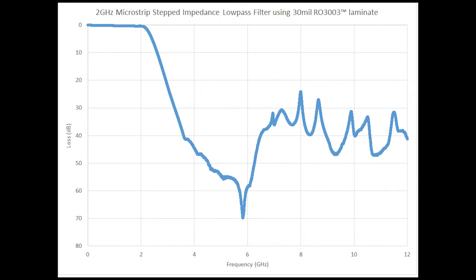Using the Butterworth also means that the transition from the pass band to the stop band is not that crisp. Over a range of frequencies you get the transition, and out around 3 gigahertz there's about 30 dB of loss, which is a considerable amount. This filter would be a good choice for an application running from zero up to two gigahertz, cutting off around three gigahertz or more.